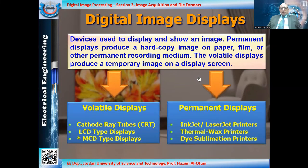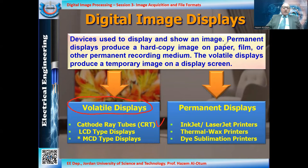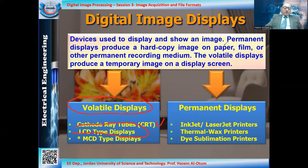As discussed, we have two types of displays. The first type is the volatile display, which includes many types: the old-fashioned CRT cathode ray tube, now almost out of operation due to advances in display miniaturization and modernization. We also have LCD liquid crystal displays, plasma displays, and LED displays, among others. All of these are volatile displays in the sense that the produced image is temporarily on the screen.